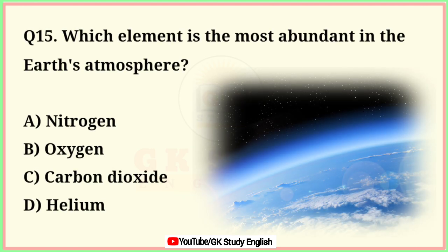Question number 15. Which element is the most abundant in the Earth's atmosphere? A. Nitrogen. B. Oxygen. C. Carbon Dioxide. D. Helium. Correct answer is option A. Nitrogen.